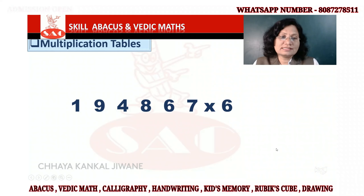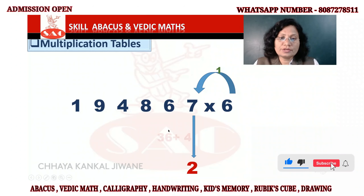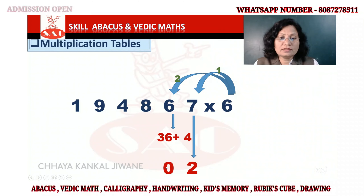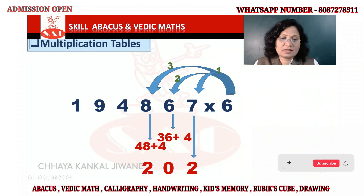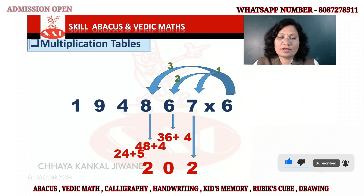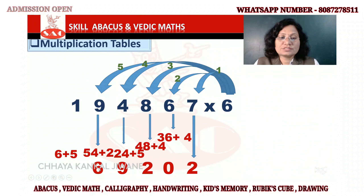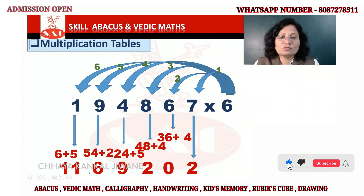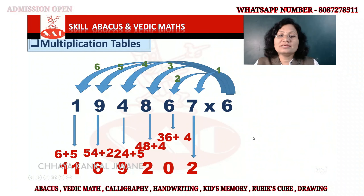Now we will see long multiplication. First step: 6 × 7 = 42, so 2 here, 4 is the remainder. 6 × 6 = 36, plus 4 = 40, 0 here, 4 is the remainder. Then 6 × 8 = 48, plus 4 = 52, 2 here, 5 is the remainder. Then 6 × 4 = 24, plus 5 = 29, 9 here, 2 is the remainder. 6 × 9 = 54, plus 2 = 56, 6 here, 5 is the remainder. 6 × 1 = 6, plus 5 = 11, write 1. Answer is 1 6 9 2 0 2.